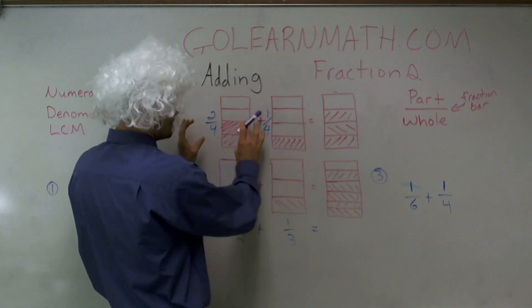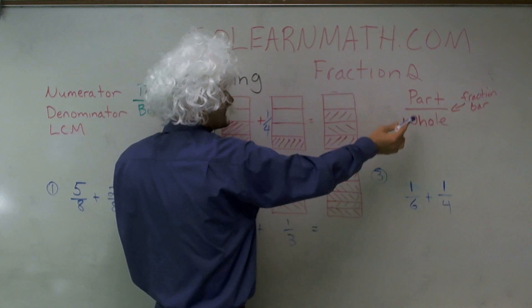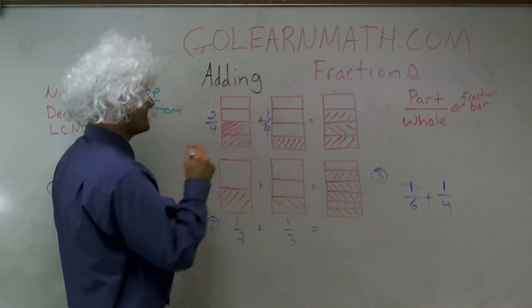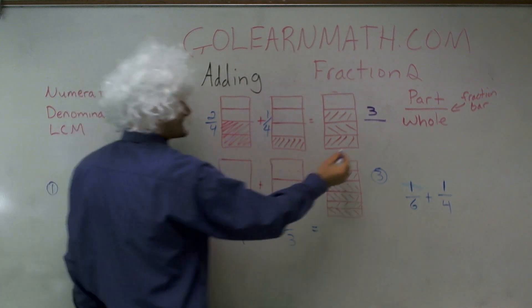Well, you'll notice if I add these two parts plus this part, I'm going to have three parts out of my whole. So therefore, my total parts I'll have will be three, and my whole is still going to be four.